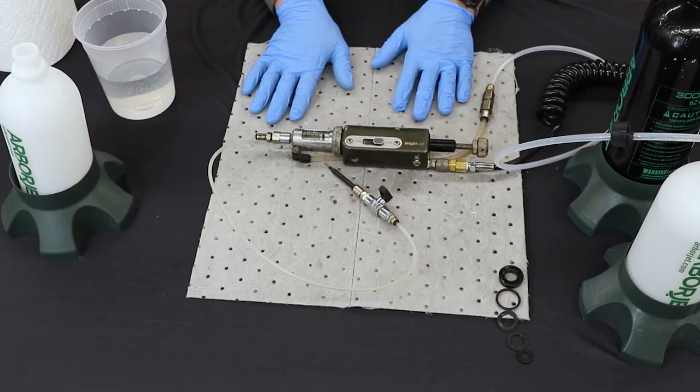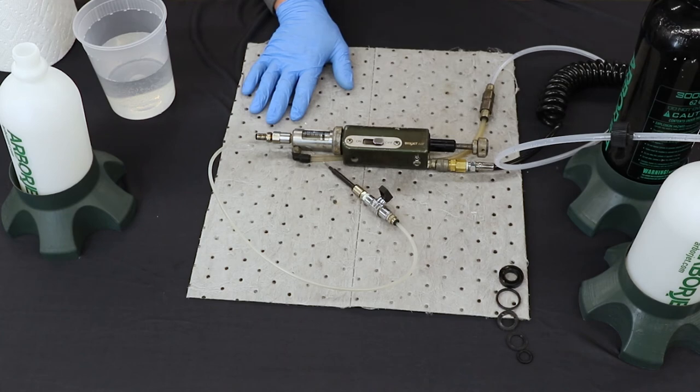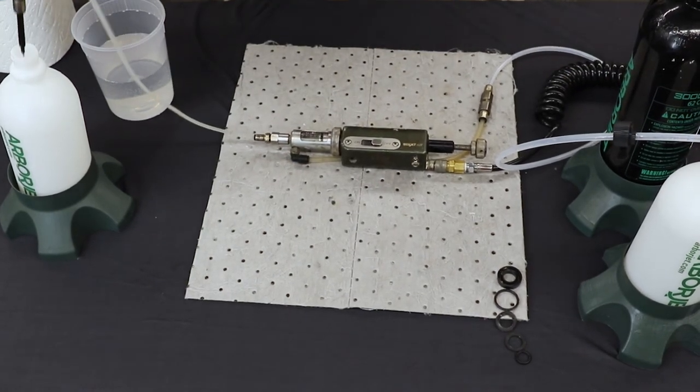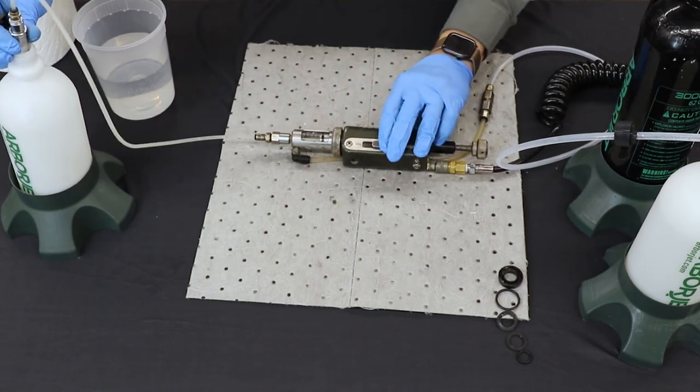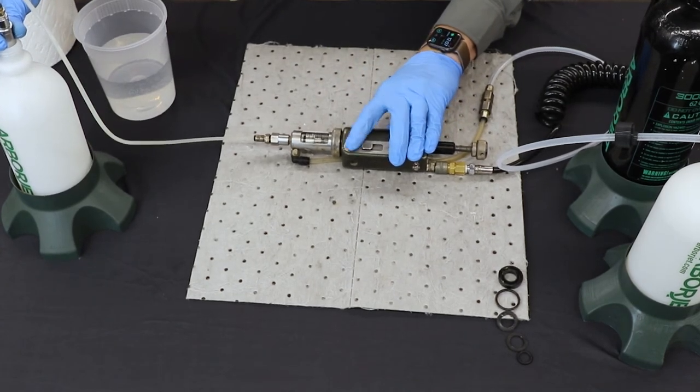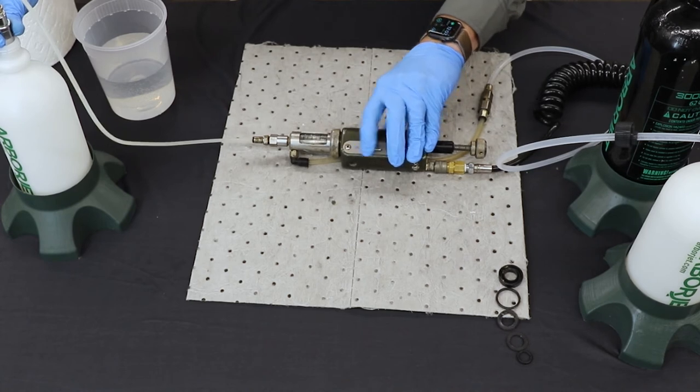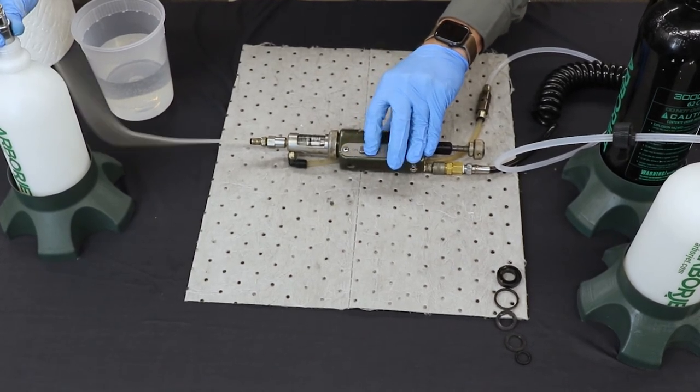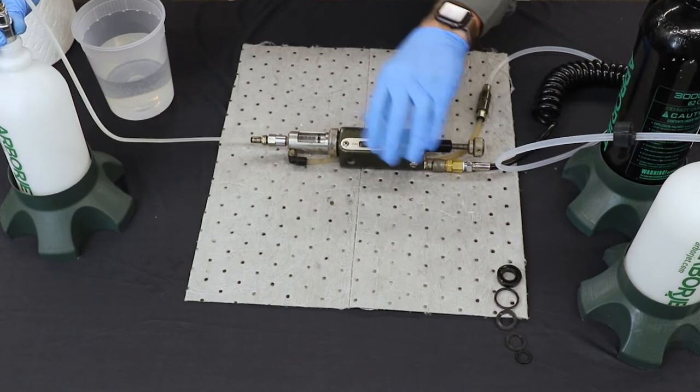Now that we've got the QuickJet Air itself rebuilt and lubricated, we've got it hooked back up to our air tank and a little bit of water so we can test it out, just to make sure everything's working well. You can see it's getting primed, so it's all primed up, so it's working properly.